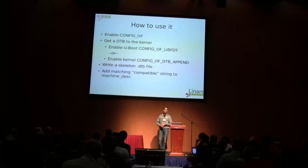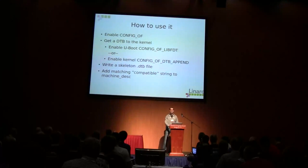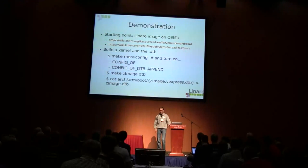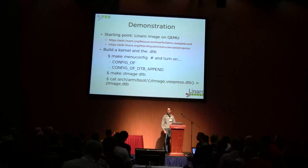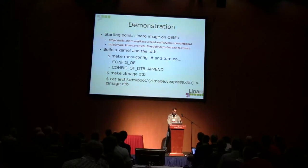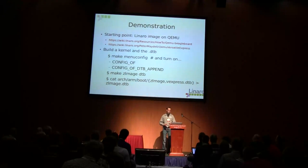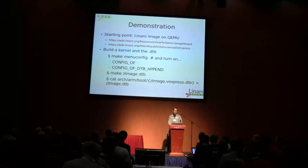You need to write a skeletal device tree file that describes your system — this is a starting point. Then you add a compatible string to the matching machine descriptor that will match against the value in the board file. For this demonstration, I started with booting the Versatile Express model in Ubuntu with the Linaro images. All you need to do is turn on CONFIG_OF and CONFIG_OF_DTB_APPEND. You make your zImage, you also make the DTB — the device tree blob — and then you concatenate them together.